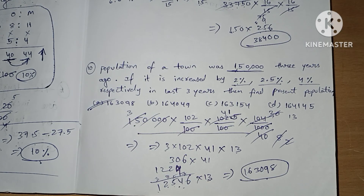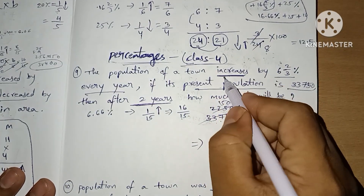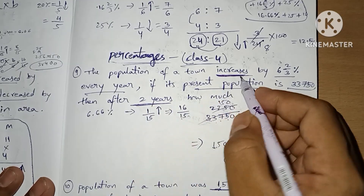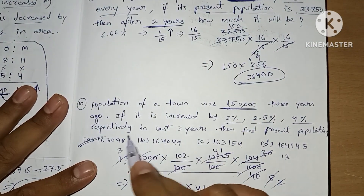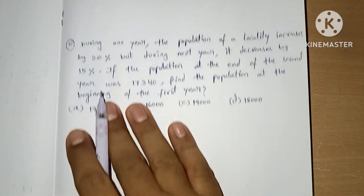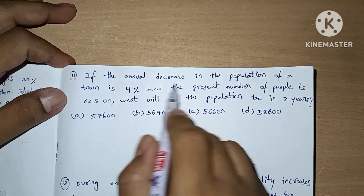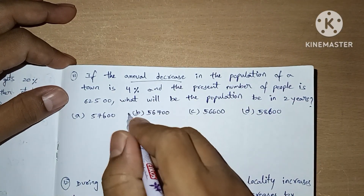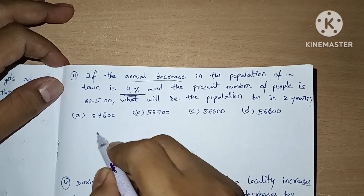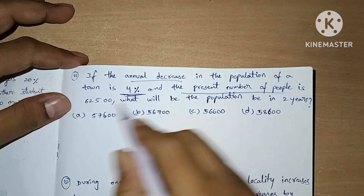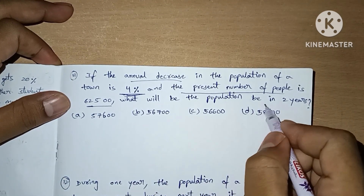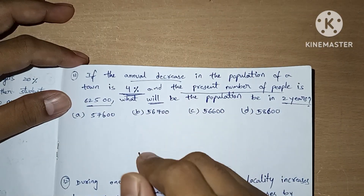Up to now we have seen questions where the population increases all years. Now we are going to see questions with decreasing population. The annual decrease in the population of a town is 4 percent. The present number of people is 62,500. What will the population be in two years — that is, after two years?